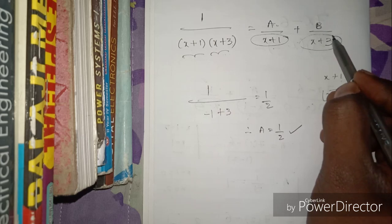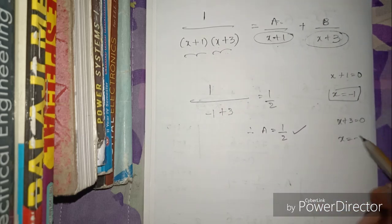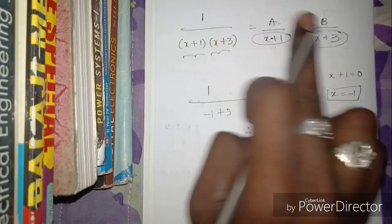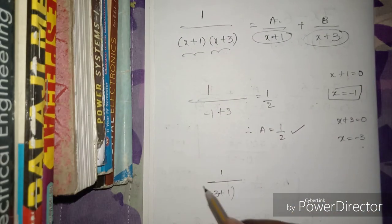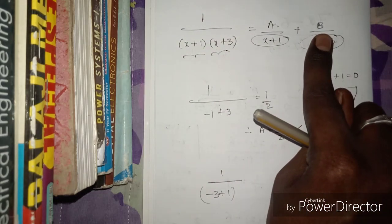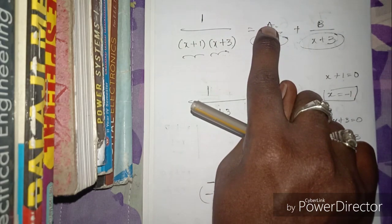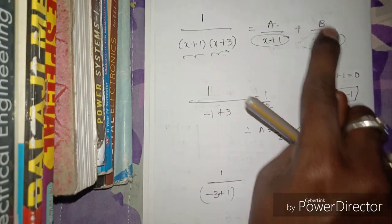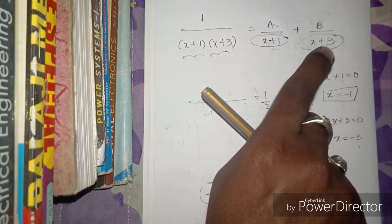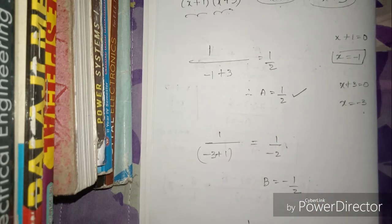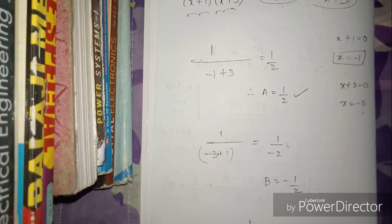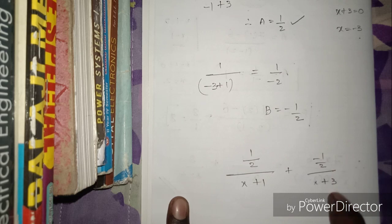For B value, close the term (x + 3): set x = -3. Substituting into the left-hand side: B = 1 / (-3 + 1) = 1 / (-2) = -1/2. So B = -1/2. Therefore the fraction equals: (1/2)/(x + 1) + (-1/2)/(x + 3).